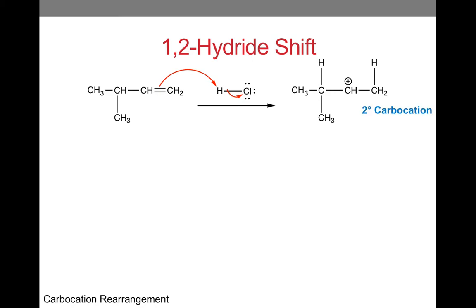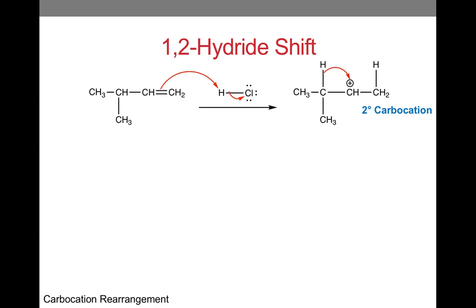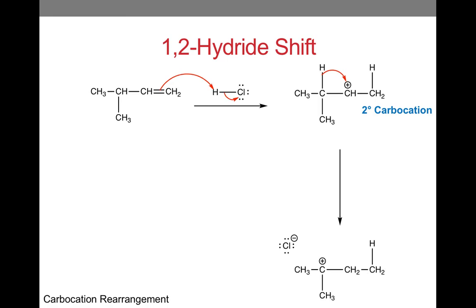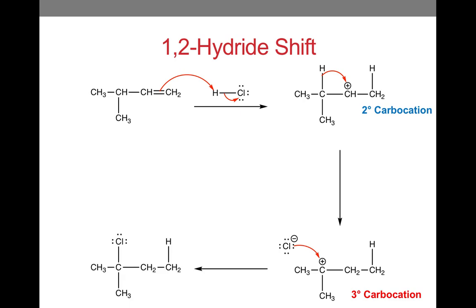This carbocation will rearrange if it can become more stable. In this case, we need a tertiary carbocation, and we can achieve that by moving a hydrogen. Moving this hydrogen gives us another carbocation intermediate. It is connected to three carbons, so it is a tertiary carbocation, which is more stable than a secondary carbocation. Also note that chloride is present from the first step of this reaction. Since opposites attract, the chloride ion will be attracted to the carbocation, and we will get our final product. This is how we get the major product of this reaction.